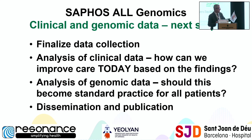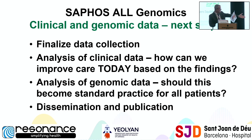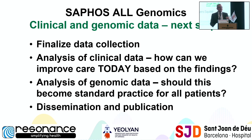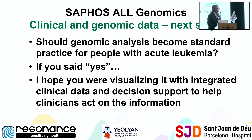Is whole genome sequencing for every patient too expensive? Let's do multiple choice — yes, no, or do it on some people. If you can't get everybody, do some. The one thing we can't do is make it standard practice and have it sit in a database — if it's going to be standard practice, it must affect the patient's care day by day, telling us information we use to save that person's life. That's what the SAPHOS study will tell us. But if we do it, we need to act on the results, which means we need an integrated information system.